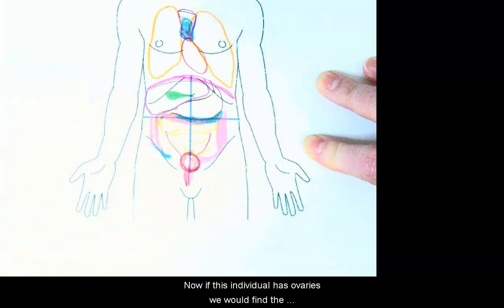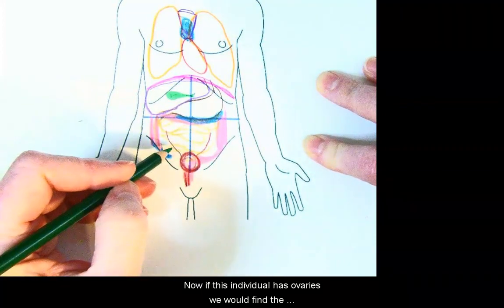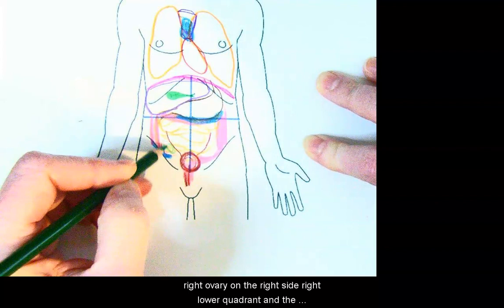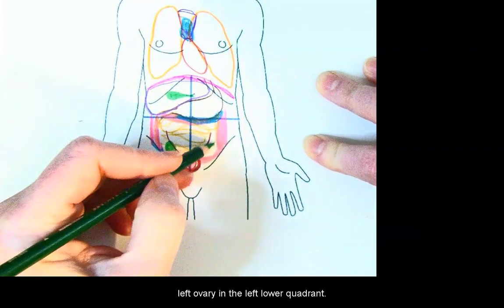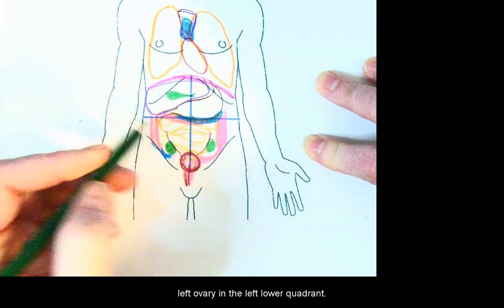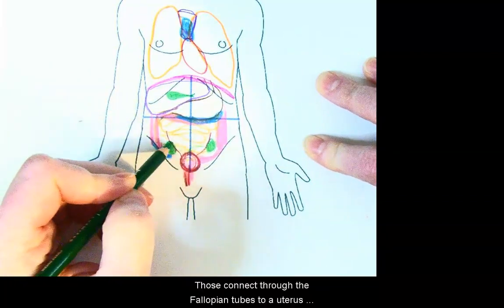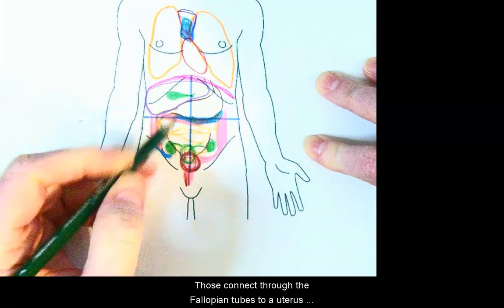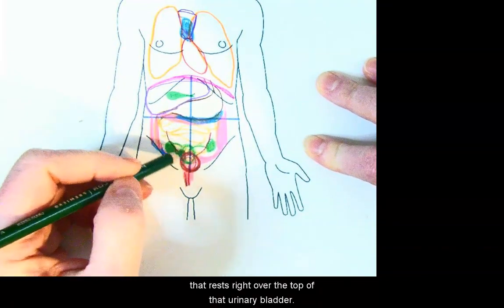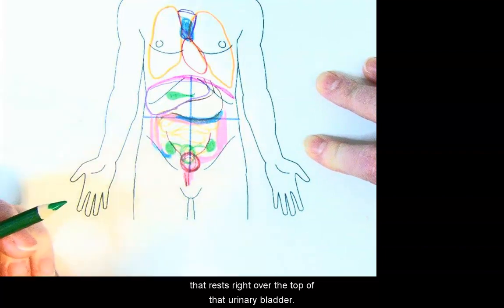Now if this individual has ovaries, we would find the right ovary on the right side, right lower quadrant, and the left ovary in the left lower quadrant. Those connect through the fallopian tubes to a uterus that rests right over the top of that urinary bladder.